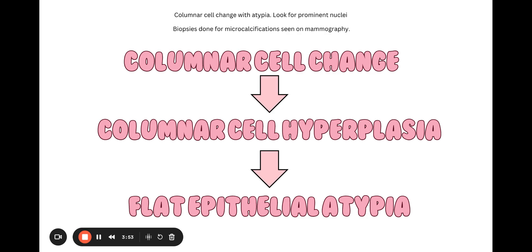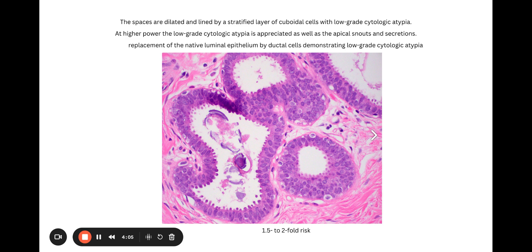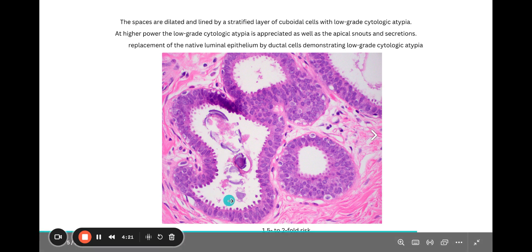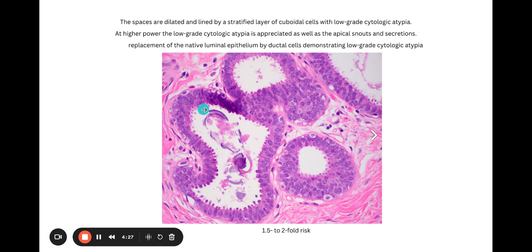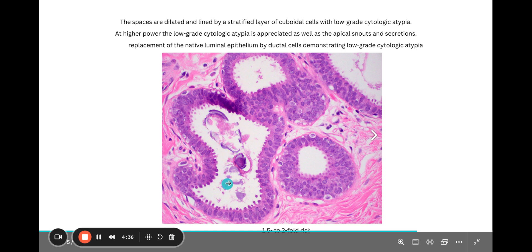The reason why these lesions are often found is because biopsies are done for microcalcifications on mammography, and that may actually just be due to FEA. When we're looking for the atypia, you want to look for prominent nucleoli. So you can see here at higher power a really nice picture of FEA. You can see that there is apical snouty — don't confuse that with apocrine metaplasia, which has more of an eosinophilic hue, whereas this is more bluish. And you can see the microcalcifications here very nicely.